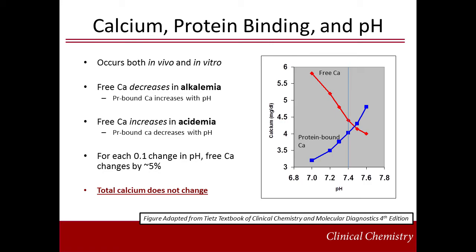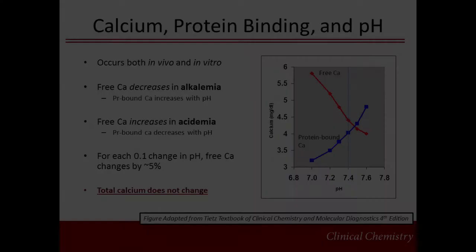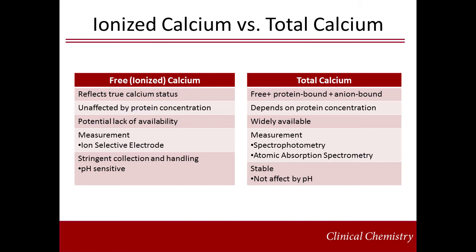Total calcium does not change with pH. Free calcium reflects the true calcium status of the body and is more accurate at indicating whether there is a calcium homeostasis disorder present. Free calcium is not affected by protein concentration, but it may not be available in all laboratory environments. Typically, ionized calcium is measured on a blood gas analyzer using an ion-selective electrode with whole blood specimens.